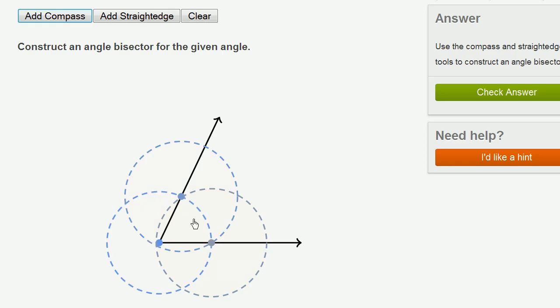And then the two places where they intersect are equidistant to both of these points. They're equidistant to both of these points. And so we can now draw our angle bisector, just like that.